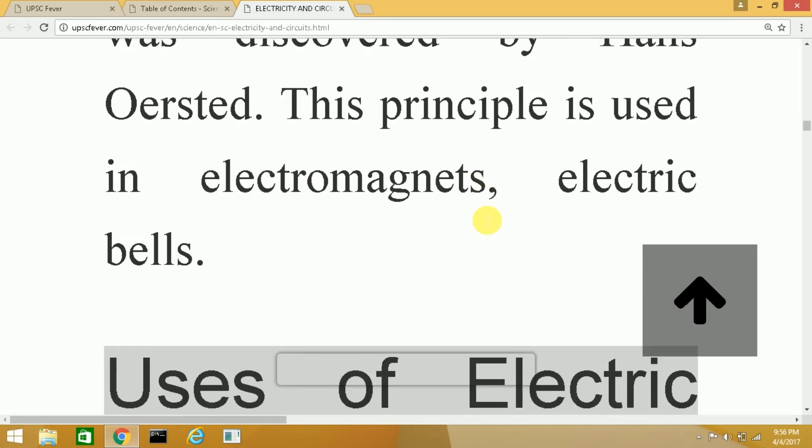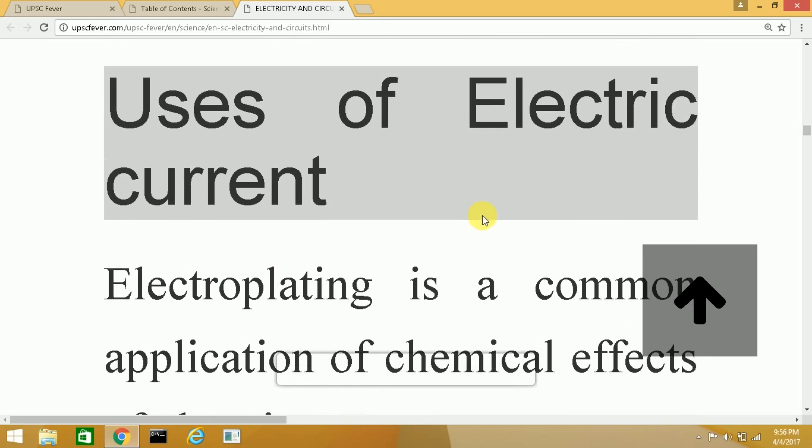The next topic is uses of electric current. Electroplating is the very common application of the chemical effects of an electric current. For example, chromium is a metal which does not rust or scratch and so iron or utensils are coated with chromium.